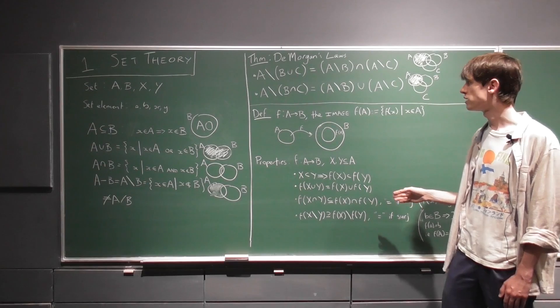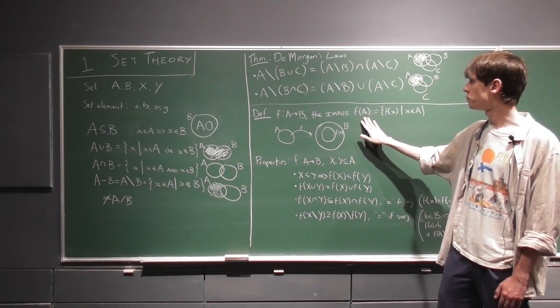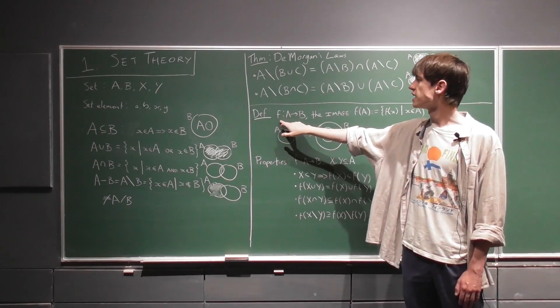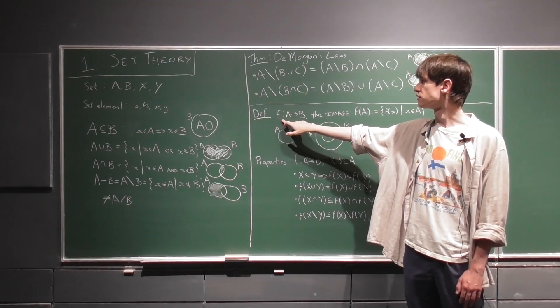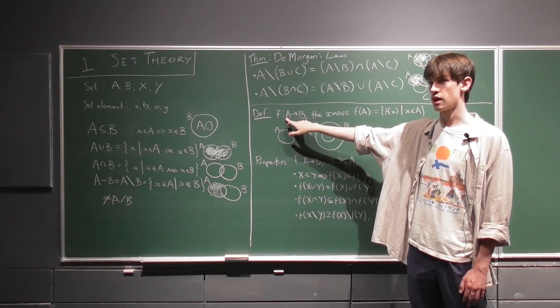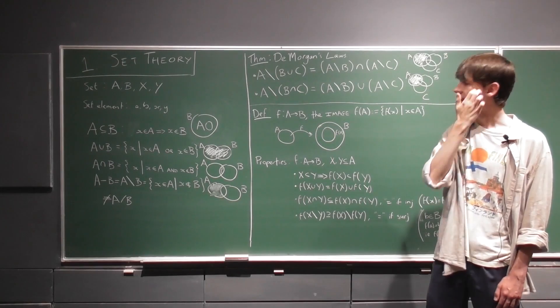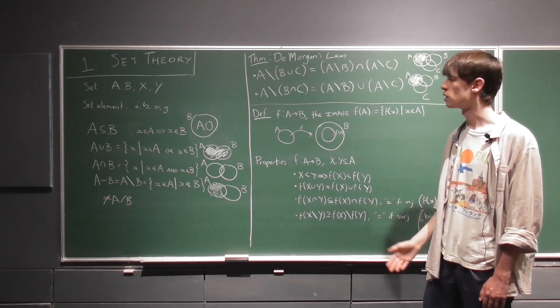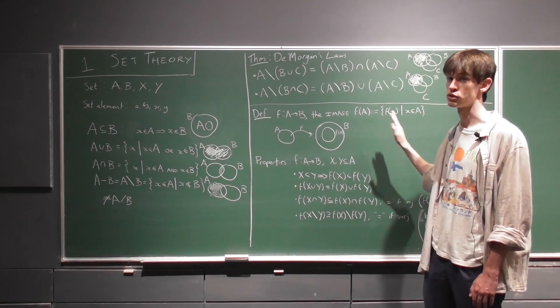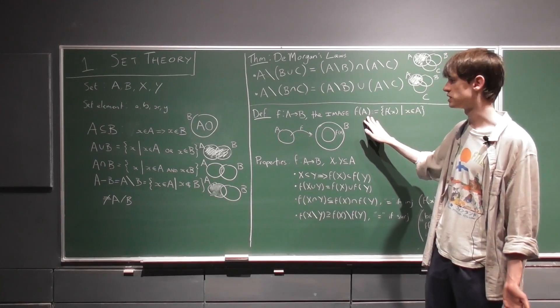An example of when f of A equals B wouldn't hold would be if A and B were both the real numbers, and f was the function x squared. So it takes any number in the real line over here and maps it to x squared in the real line over here. But of course any real number squared is always going to be positive, so that means that f of A would just be positive numbers, which is not equal to the entirety of the real numbers.